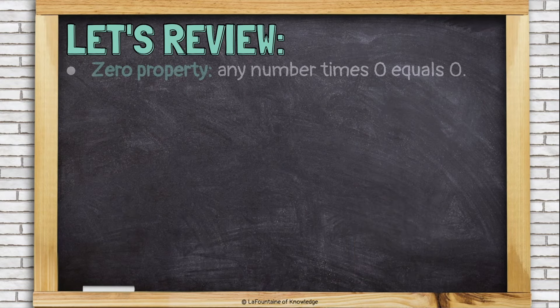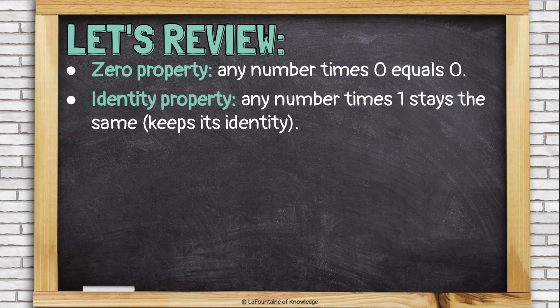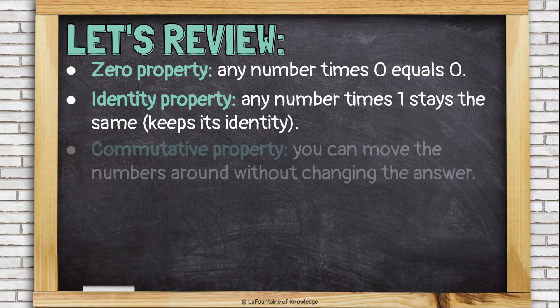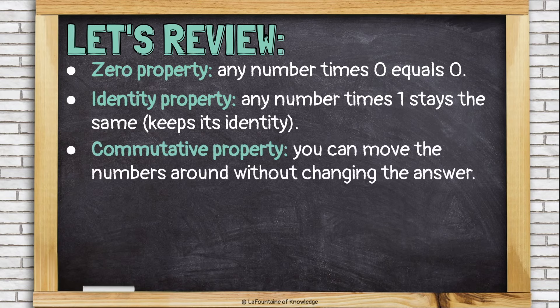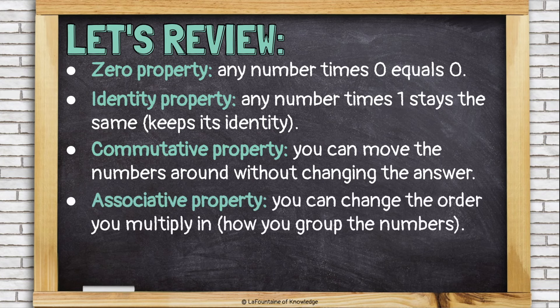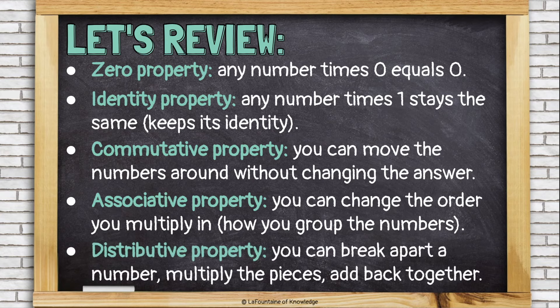Let's review. The zero property says that any number times zero equals zero. The identity property says that any number times one stays the same — it keeps its identity. The commutative property says that you can move the numbers around without changing the answer — that's what commute means, to move or travel. The associative property says you can change the order you multiply in or how you group the numbers. And the distributive property says you can break apart a number, multiply the pieces, and then add them back together.